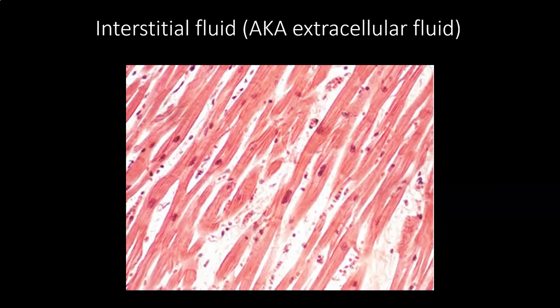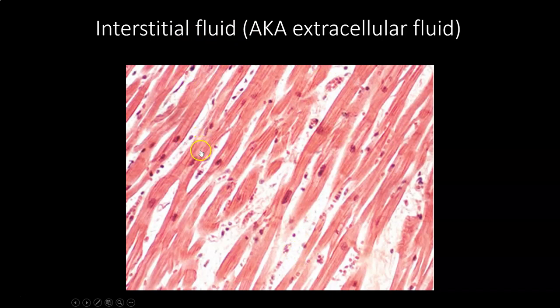Interstitial fluid is the same thing as extracellular fluid — it's the fluid between the cells. Looking at a cardiac muscle slide under the microscope, it looks like there's space between the cells, but in reality that space is filled with interstitial fluid. Those cells get nutrients, respiratory gases, and must expel waste through that fluid. So this fluid is not just filler; it's very important for cell function.